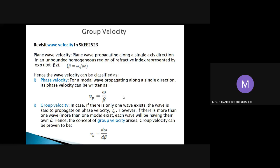Phase velocity is applicable when there is only a single wave propagating. But in the case of more than one wave propagating - for instance in a multimode fiber structure where we have many modes, also known as rays of light - each of these waves will propagate at its own velocity. This is known as group velocity. If more than one wave exists, each wave has its own β, its own propagation constant.